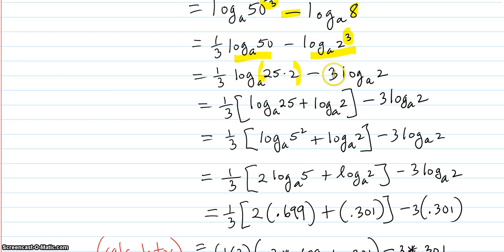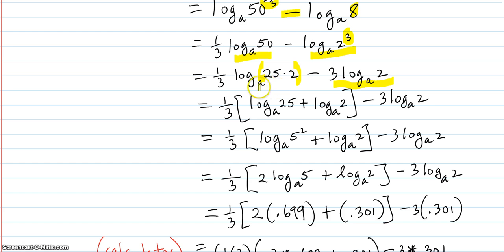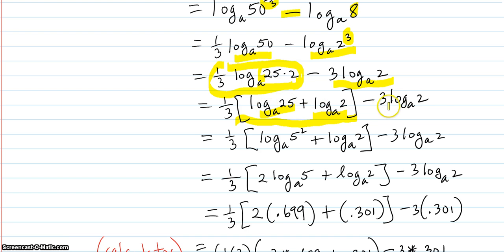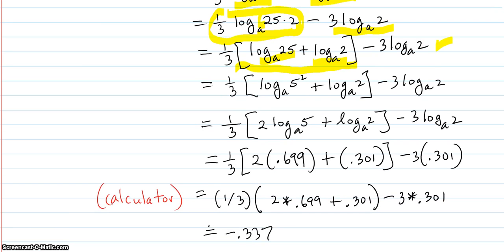Apply the power rule to bring the 3 to the front for the log of 2 cubed. Now we have log base A of 2, which we know from the given values. Then we apply the one-third to just this part: log of 25 plus log base A of 2, and subtract the quantity we already have.